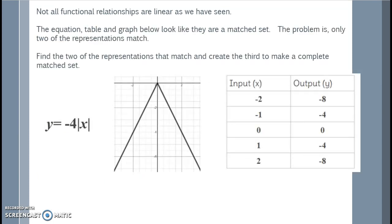The equation, table, and graph below look like they are a matched set. The problem is, only two of the representations match. Find the two representations that match, and create the third to make a complete matched set. So I have the equation y equals negative 4 times the absolute value of x, a graph of an absolute value, and a table of input outputs.